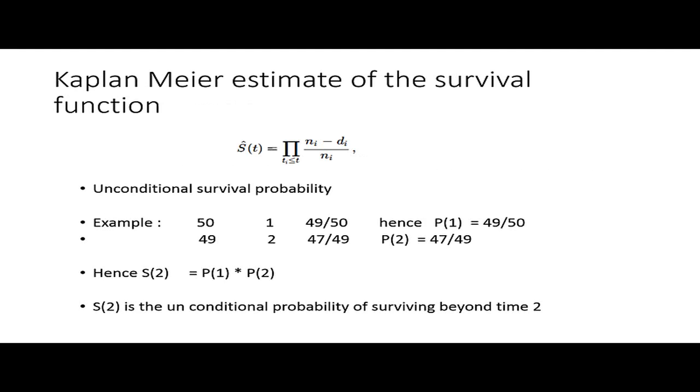How do we estimate the survival function? We estimate using Kaplan-Meier estimation method. You can see the formula on the screen. It's the product of your conditional probability of the event happening at each time. Ni is the number of observations entering at a particular time. Di is the number of events happening divided by the total number of observations entering.